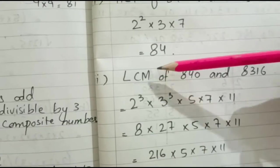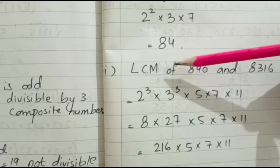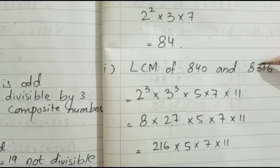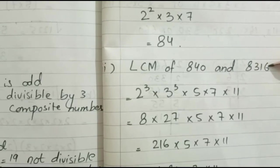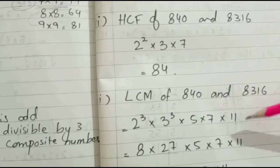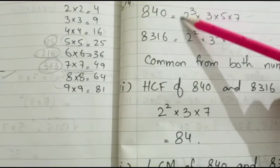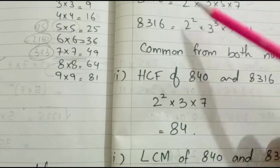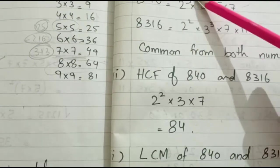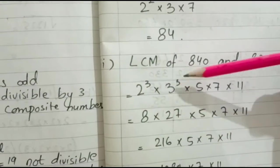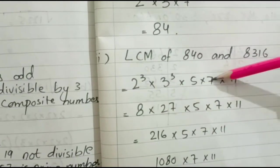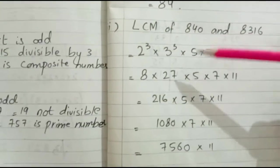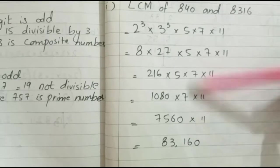The second part is finding the smallest common number — the LCM of 840 and 8316. For LCM, we take all the numbers but include common numbers only once, then include the remaining numbers as well: 2, 2, 3, 3, 5, 7, and 11. We write all the remaining numbers and multiply them to get the final answer.